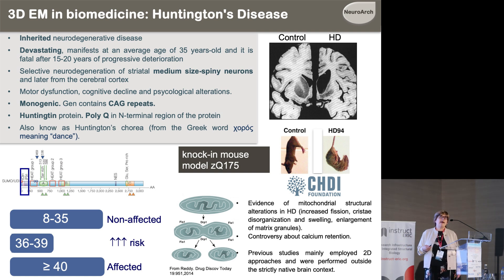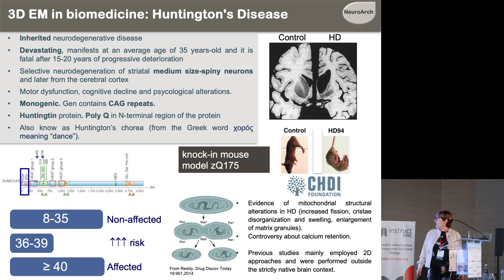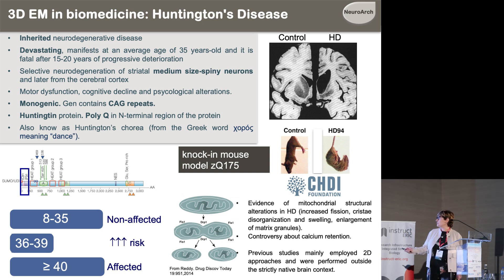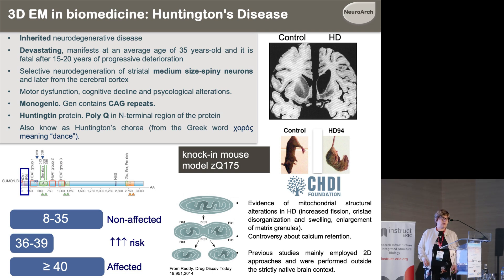We wanted to explore the subcellular alterations that occur in Huntington's disease. As this is a monogenic disease, there are pretty good mouse models of the disease, and this is the one we have been using. When we started this work, there had been evidence from other groups that mitochondrial structural alterations were occurring in Huntington's disease, but most of these studies were done in 2D approaches and were performed outside the native brain context.